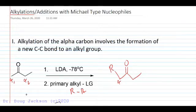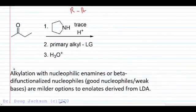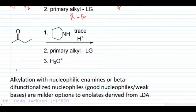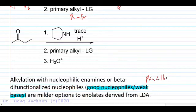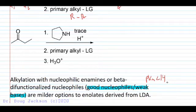With enolate alkylations involving beta-difunctionalized nucleophiles, they're going to be good nucleophiles and weak bases. Beta-keto esters and beta-diketones have pKas less than 16 — around 14 — so we have efficient proton transfer with a base like hydroxide or methoxide. These are milder options, preferred over LDA enolates because of the safety factor and dangers associated with using LDA.